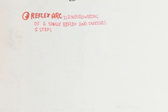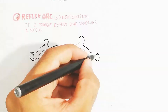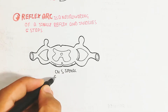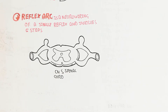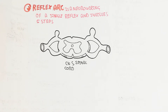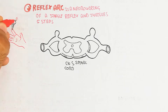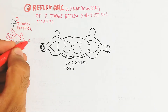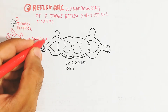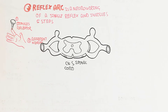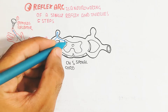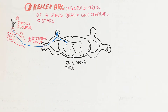Here is a simple diagram of the spinal cord cross-section showing the anterior and posterior view. This is the central nervous system — the spinal cord — while the hand is part of the peripheral nervous system. The dorsal root ganglion and ventral root ganglion are also peripheral nervous system components.